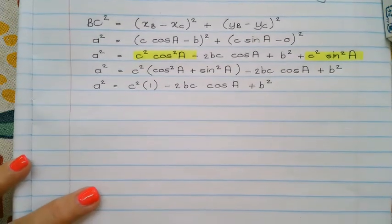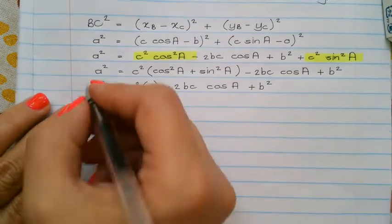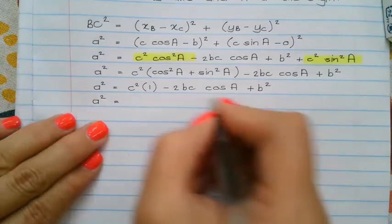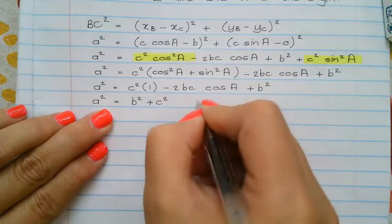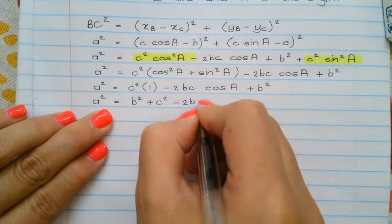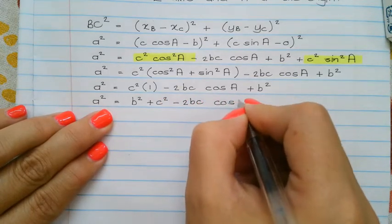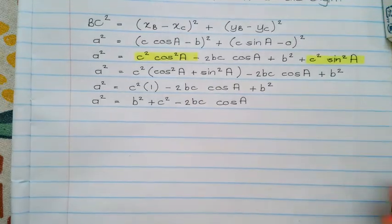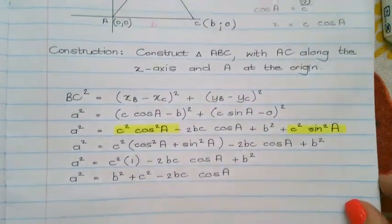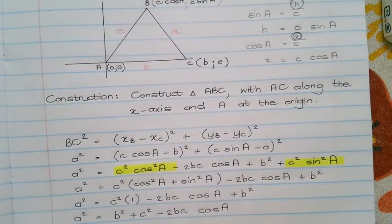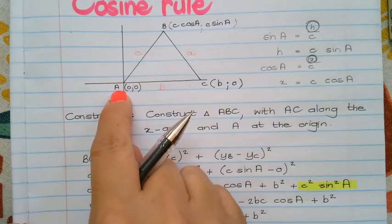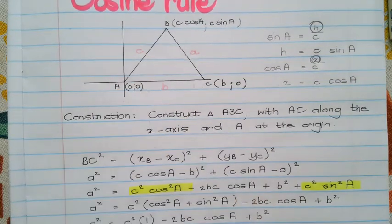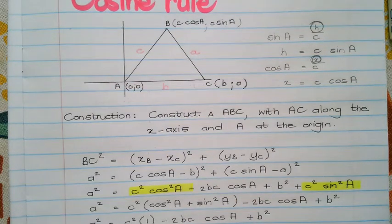So a squared equals to b squared plus c squared minus 2bc cos of angle a. And similarly, I will be able to prove this either the other way around, if I change that angle to angle b, or if I change that angle to angle c. Right, and that then concludes the cosine rule.